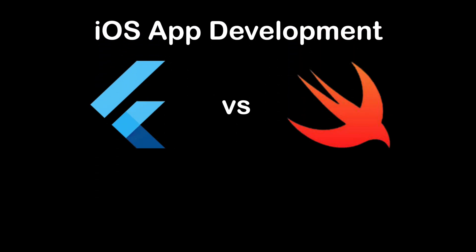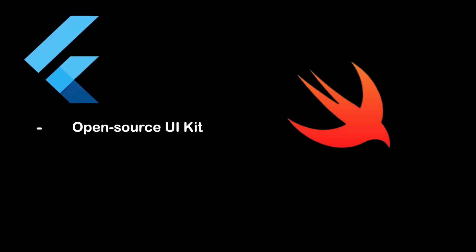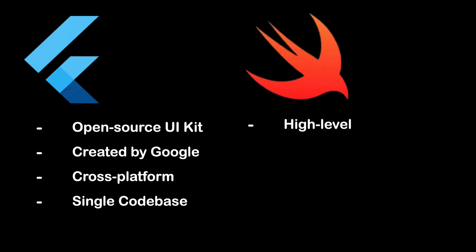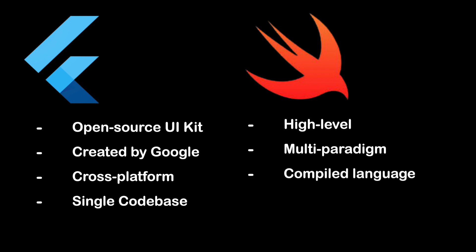This raises the challenge of choosing the right framework between Flutter and Swift. Although both frameworks are equally efficient and cater to most business requirements, certain metrics make them different from one another. Flutter is an open-source UI software development kit created by Google that allows cross-platform application development with a single code base. However, Swift is a high-level, general-purpose, multi-paradigm compiled programming language introduced as a replacement for Apple's traditional programming language, Objective-C.